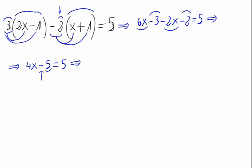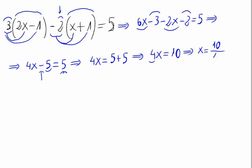So the 5 as it is, and minus 5 goes as plus 5 to the other side. So we would have 4x equals 5 plus 5, which is the same as 4x equals 10. And as the 4 is multiplying the x, it goes dividing, and x would be 10 divided by 4.